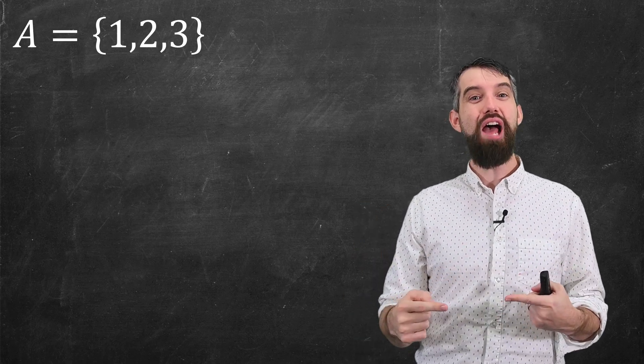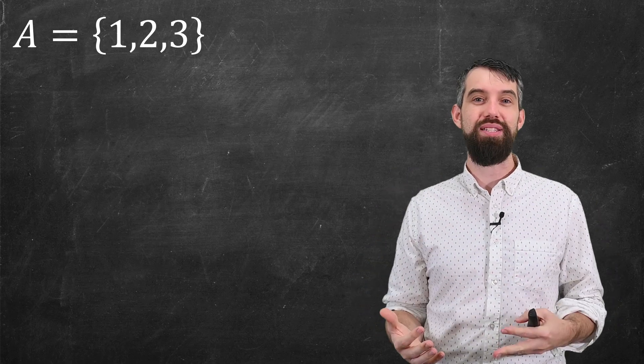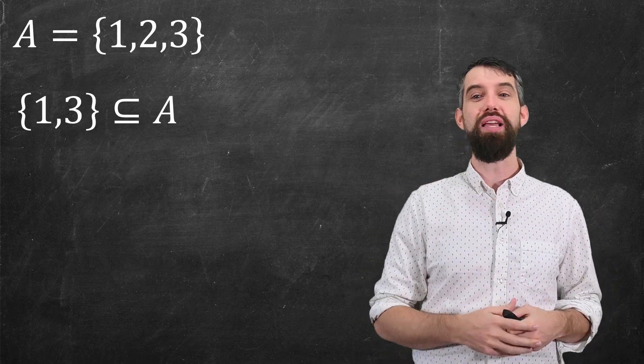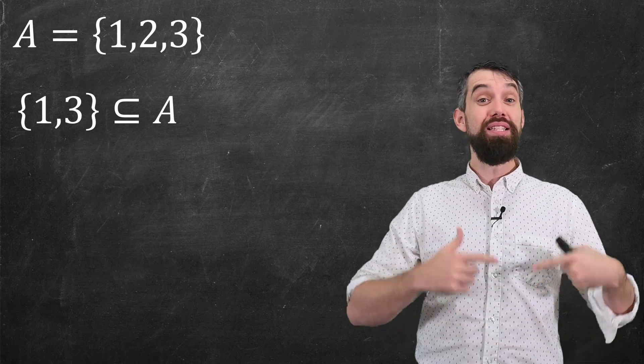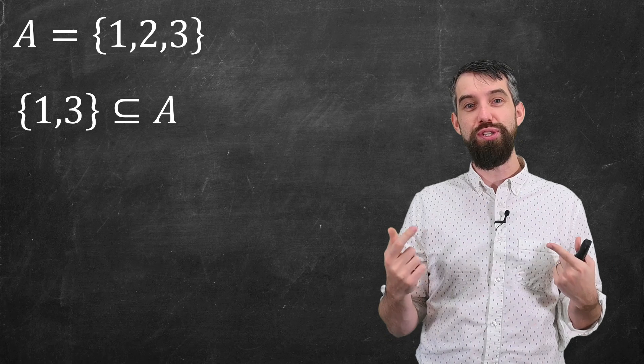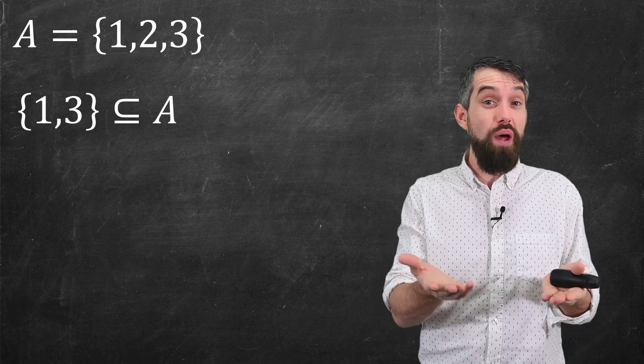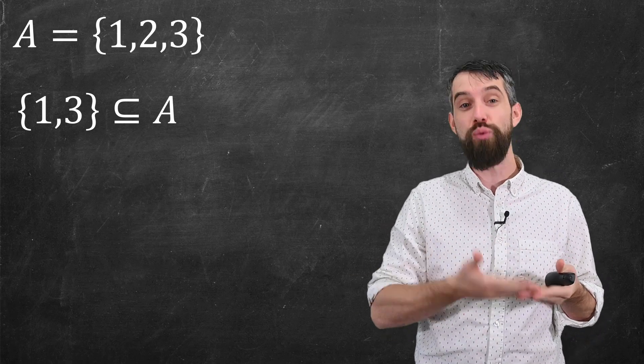And then any set is going to have various subsets. So what's a subset? Well something like the set {1, 3}. It itself is a set and we think of it as a subset of the original A because everything inside of {1, 3} is in A. One is in A and three is in A.